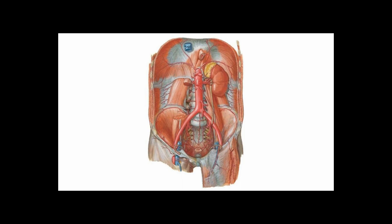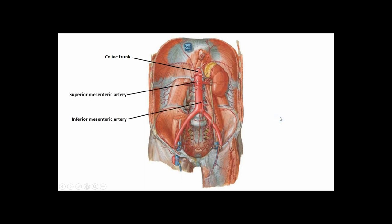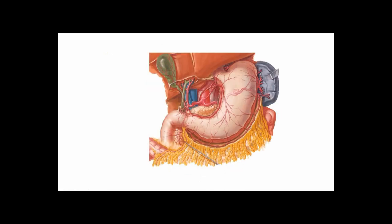Let's talk abdominal vasculature now that we've got ourselves primed. Here we have a view of the abdominal aorta and the vessels going to the gut tube. The big three that we care about right now are the celiac trunk, the superior mesenteric artery, and the inferior mesenteric artery.